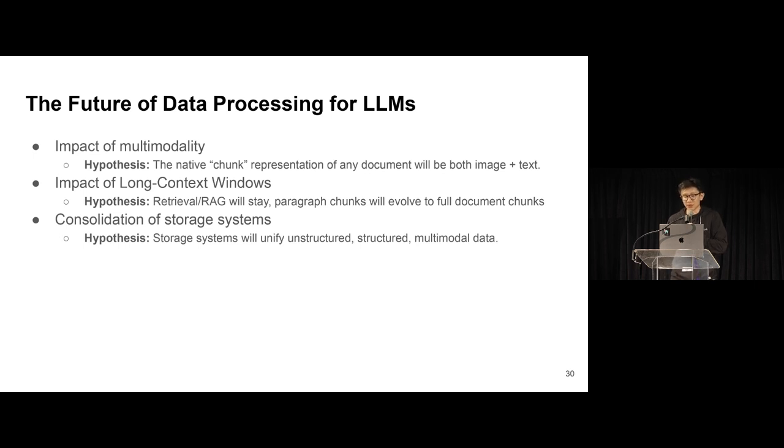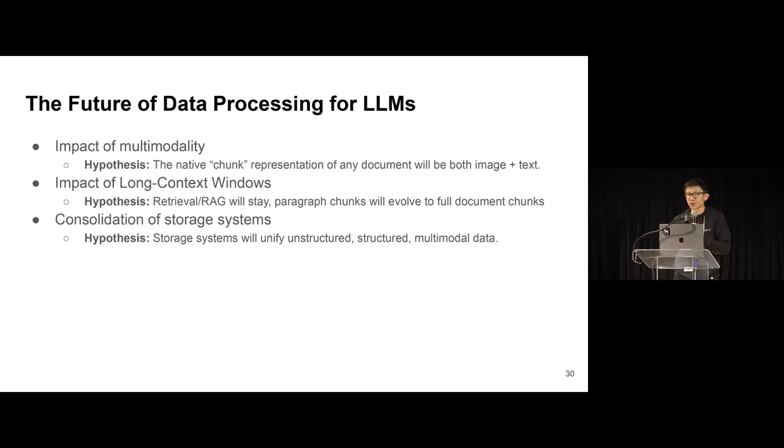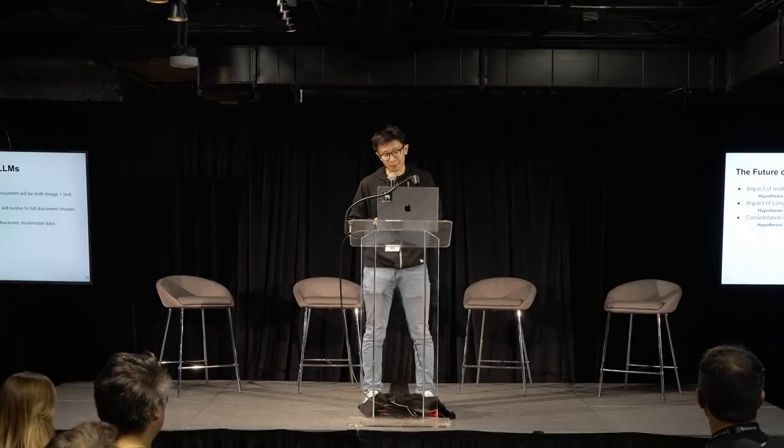And generally speaking, we think that retrieval RAG will stay, especially over larger document corpuses, but we think that the interesting thing to think about is a lot of people are talking about vector databases, but what we generally need is probably a more unified storage system that can not only search by vectors, but a lot of different types of query interfaces, whether it's SQL, whether it's knowledge graphs, and unify unstructured structured multimodal data, especially as models become more multimodal themselves. So interesting things to think about.